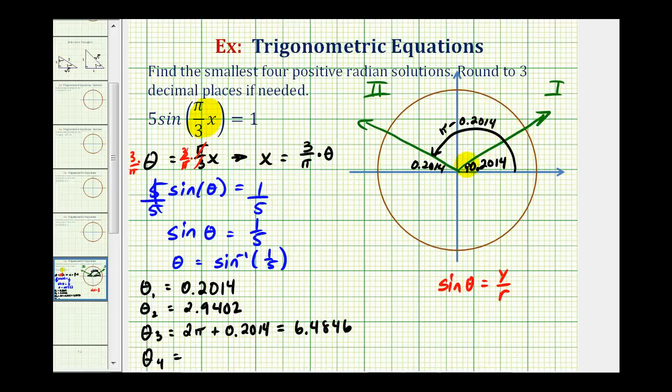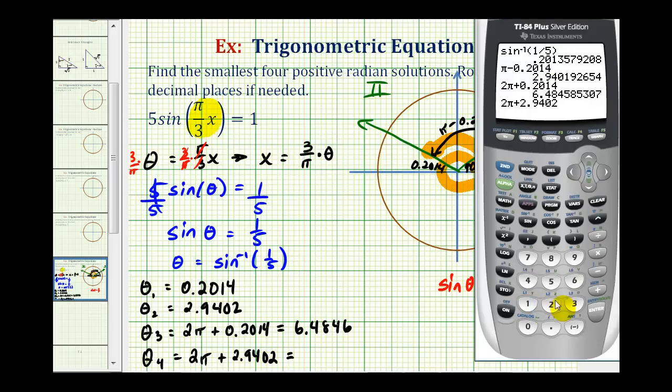And then θ₄ would be coterminal with this angle here. So we would have 2π + 2.9402 radians, which is approximately 9.2234.